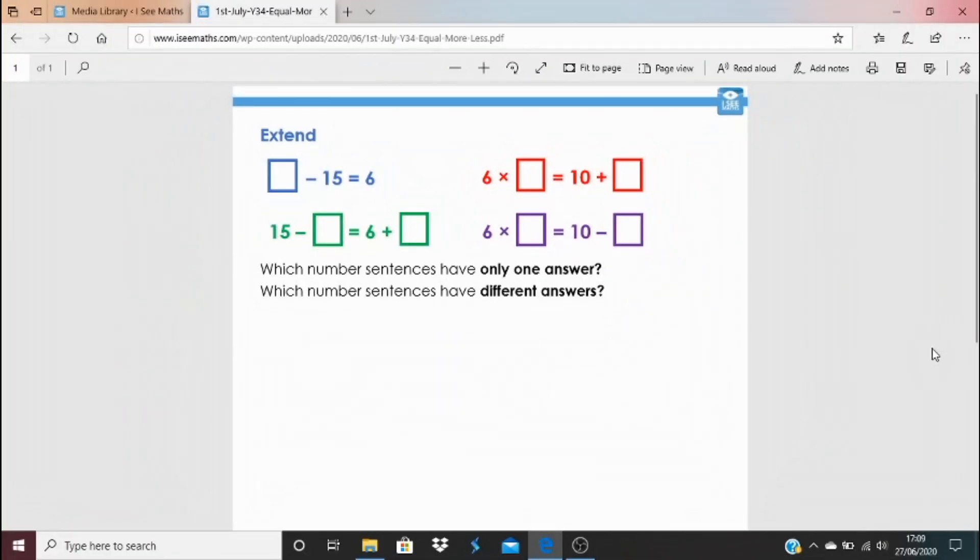Now, if you've got room for some more, click on the blue link underneath the video. Have a look at these examples here. So some of these number sentences only have one possible answer, but some have different answers. So I wonder which questions only have one answer, which have different numbers of answers. If you want to extend yourself, how many answers do they have for the examples here? Okay, so good luck with that. And I'll see you again tomorrow.